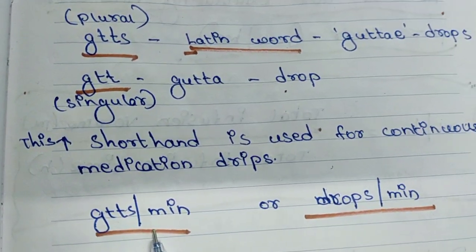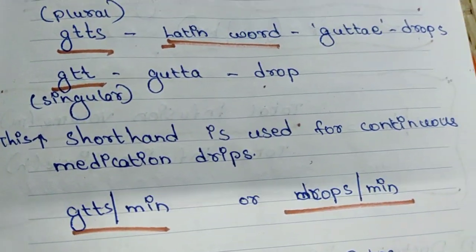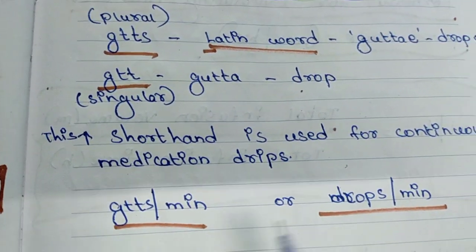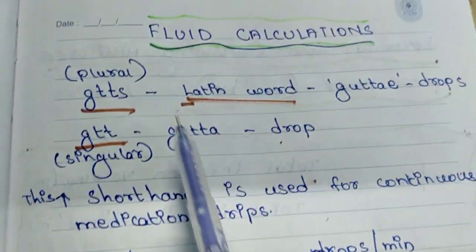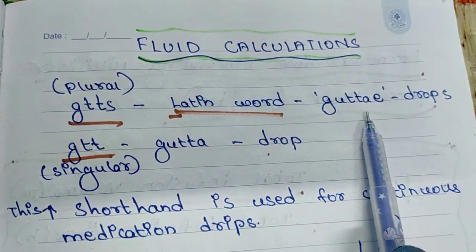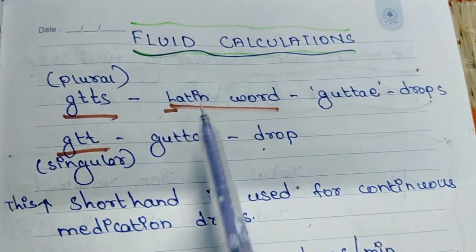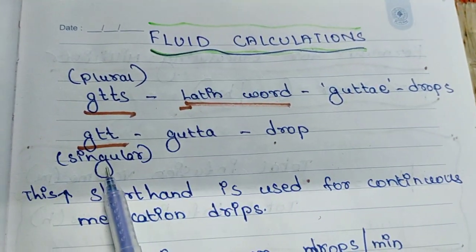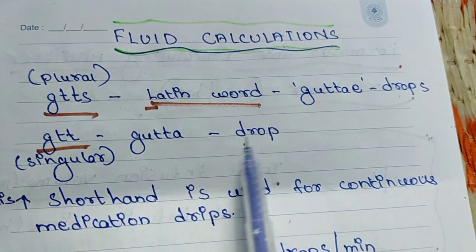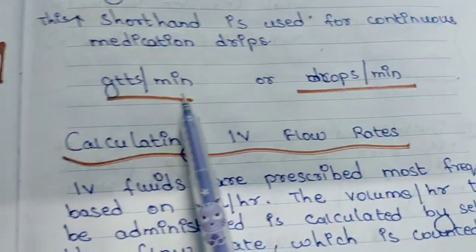You can write it as GTTS per minute or drops per minute — it is the same. It's a shorthand technique used in the medical field. GTTS stands for 'guttae,' meaning drops (plural), and GTT stands for 'gutta,' meaning drop (singular).